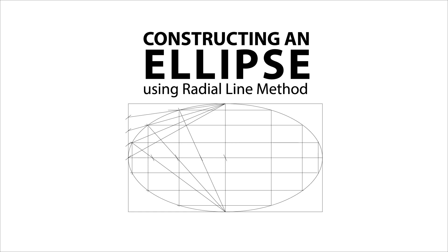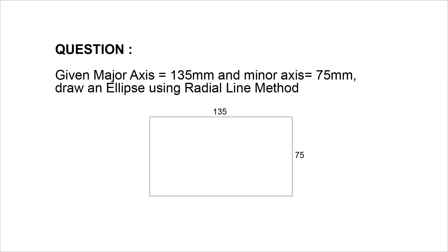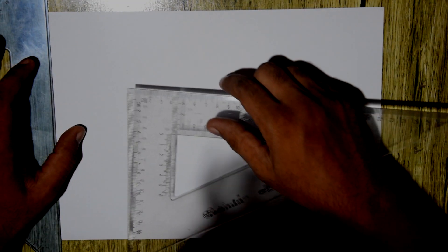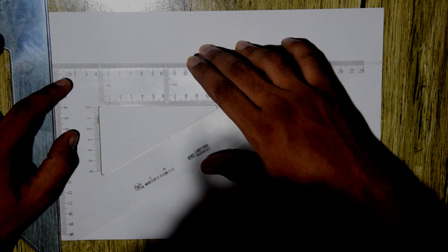Okay, let's start working. Please copy the question. The major axis will be the length and the minor axis will be the width of the rectangle. Draw the major and minor axis using your set square. You can use the t-square if you have one.